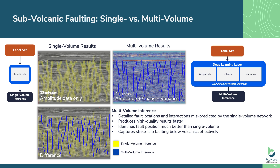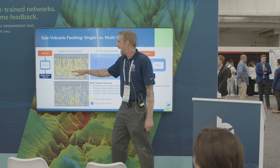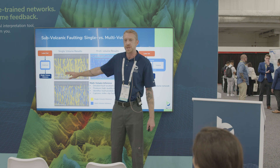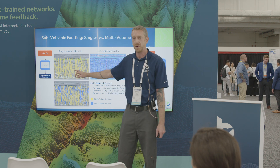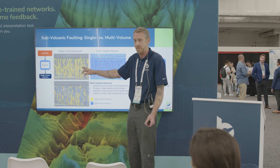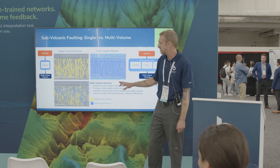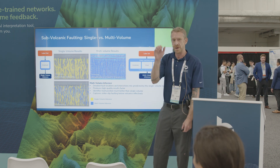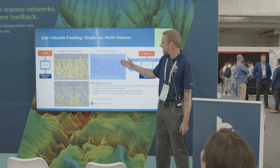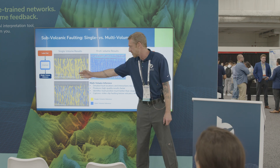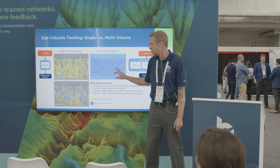Here are the results from the sub-volcanic faults. The single-volume amplitude network on the left — if I could pick one word to describe this inference, it would be diffuse; another word would be confusing or misleading. This is after 33 minutes of training. Now compare that with the multi-volume results: four minutes of training on amplitude, chaos, and variance, and you can clearly see the difference in character of the fault predictions.